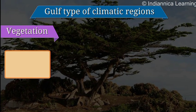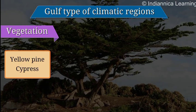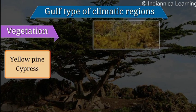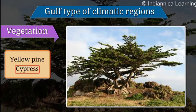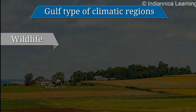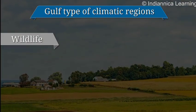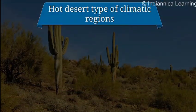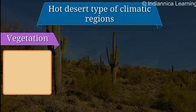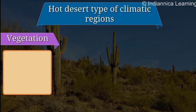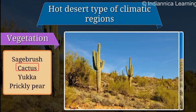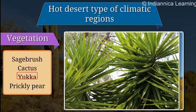Gulf type: The regions with the Gulf type of climate consist of lowland deciduous trees like yellow pine and cypress. Wildlife is rarely found here.